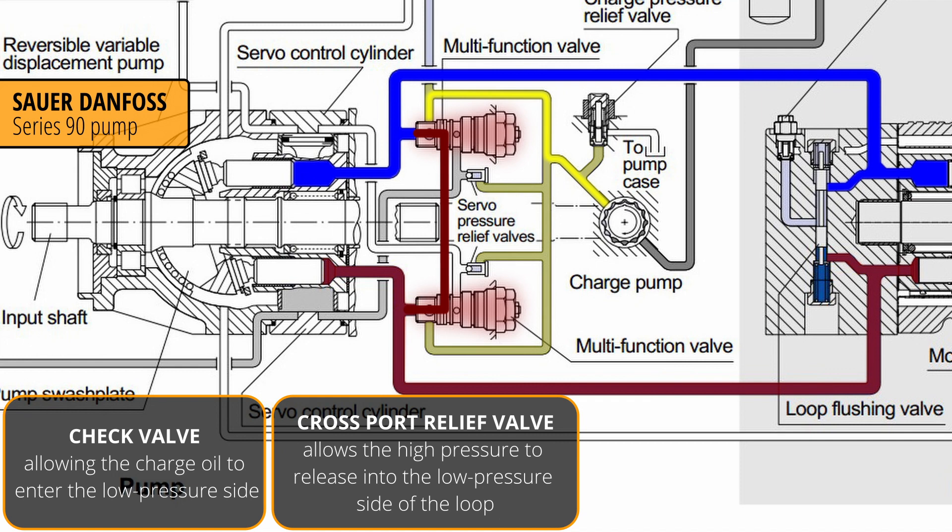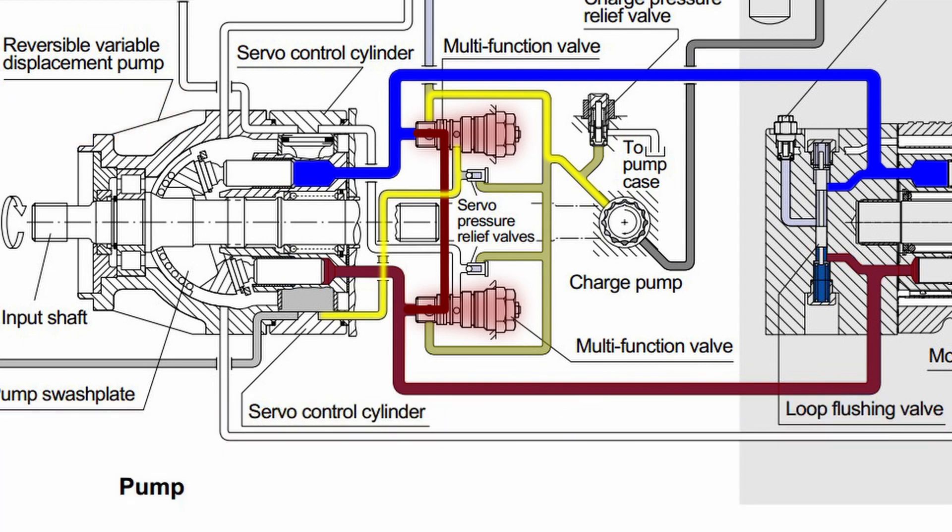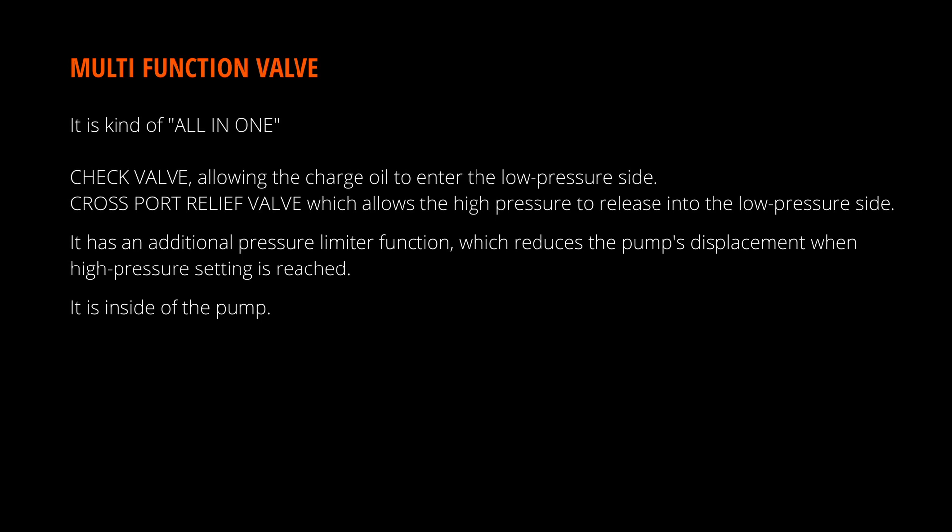It has an additional pressure limiter function, which reduces the pump displacement when high pressure setting is reached. When the system pressure rises, the oil is redirected into the servo cylinder opposite to the one that is tilting the swash plate, which moves the servo cylinder and destrokes the pump.